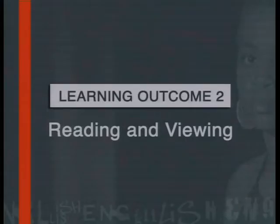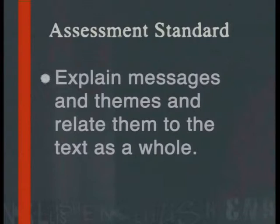The following lesson is linked to Learning Outcome 2, Reading and Viewing, and addresses the assessment standard that requires learners to be able to explain messages and themes and relate them to the text as a whole.